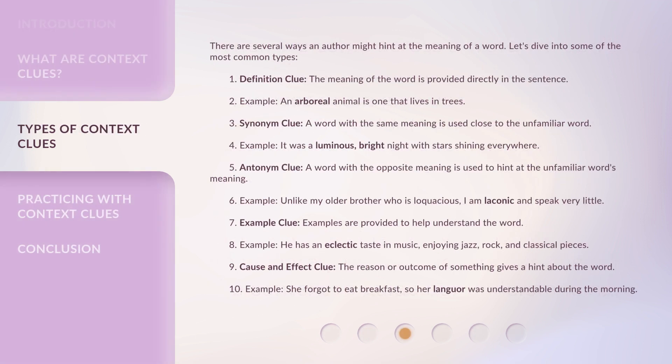There are several ways an author might hint at the meaning of a word. Let's dive into some of the most common types. First, the Definition Clue: the meaning of the word is provided directly in the sentence. For example, an arboreal animal is one that lives in trees. Second, the Synonym Clue: a word with the same meaning is used close to the unfamiliar word. For example, it was a luminous, bright night with stars shining everywhere.